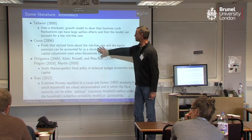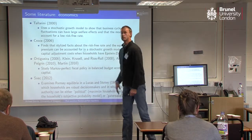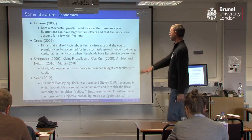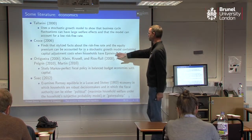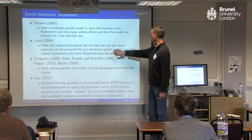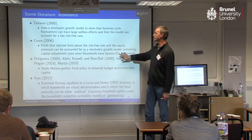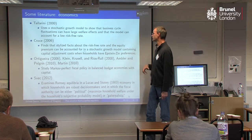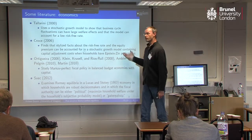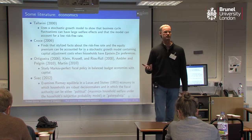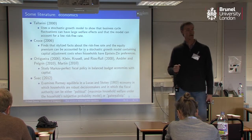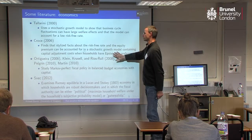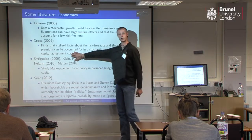This paper by Croce is similar. It has Epstein-Zin preferences — so it's a business cycle model or stochastic growth model with Epstein-Zin preferences, which as I mentioned are a generalisation on risk-sensitive preferences. They're going to generate the low risk-free rate and a return on equity, though it's not coming so much from the Epstein-Zin preferences but rather from capital adjustment costs.